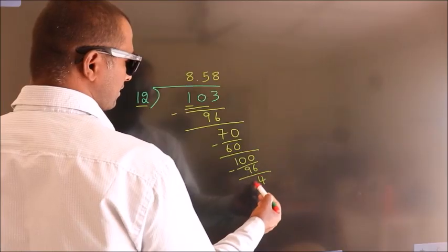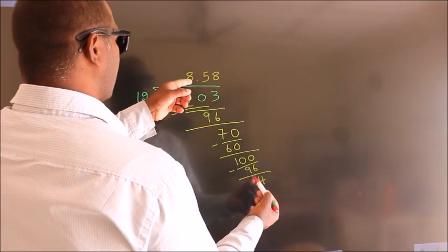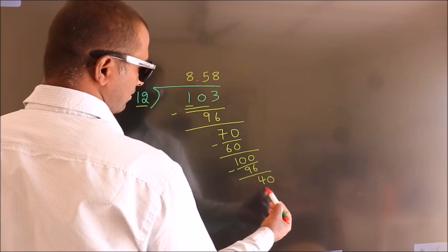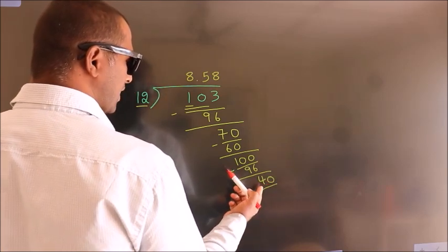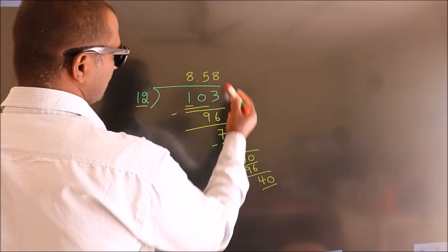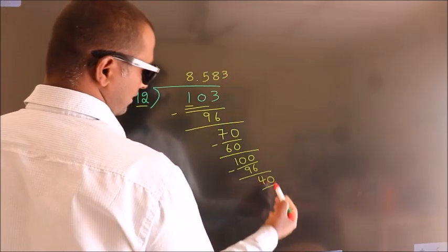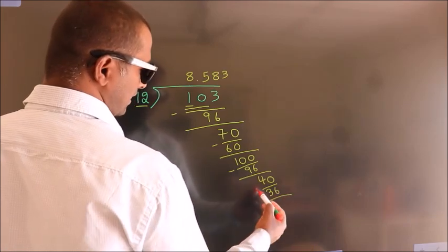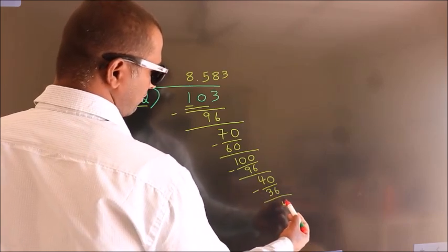After this, we already have the decimal, so directly take 0. So 40. A number close to 40 in the 12 table is 12 times 3, which is 36. Now we subtract, we get 4.